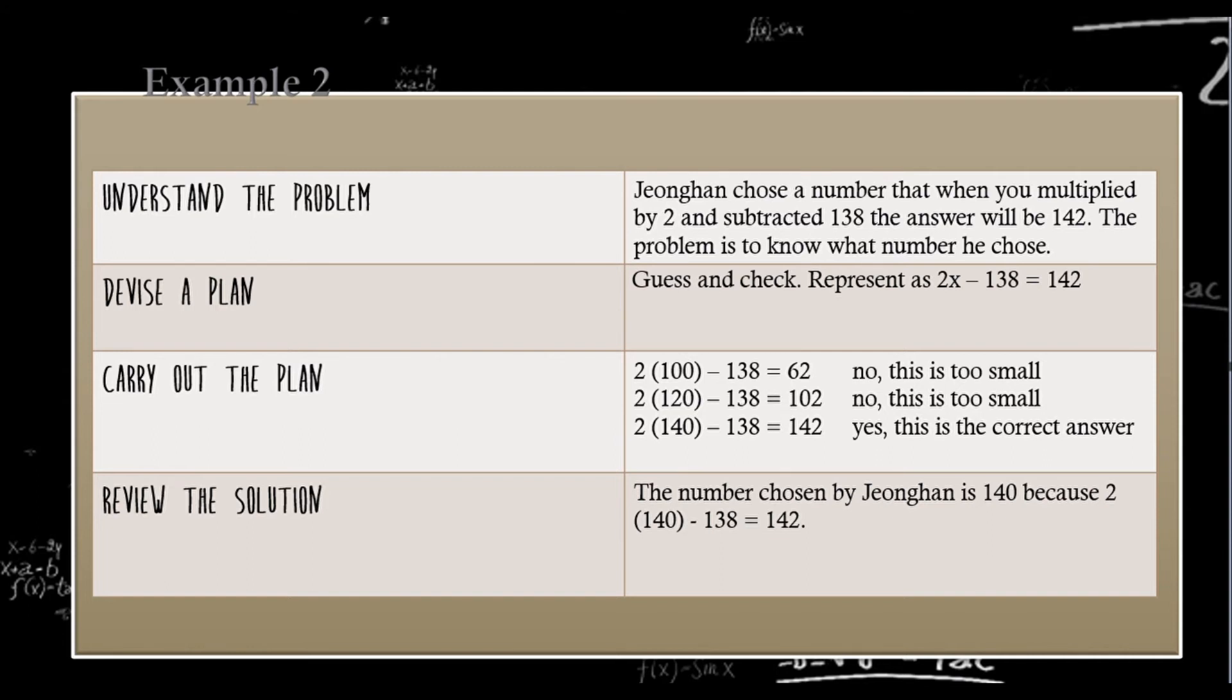The first number that I guess is 100. 2(100) - 138 = 62, no, this is too small. The second number that I guess is 120. 2(120) - 138 = 102. Again, this is too small. The third number that I guess is 140. 2(140) - 138 = 142. Yes, this is the correct answer. To review the solution, the number chosen by Jonghan is 140 because 2(140) - 138 = 142.